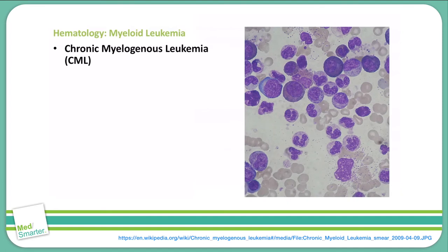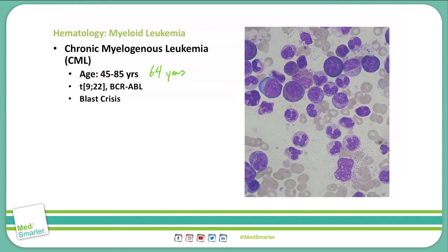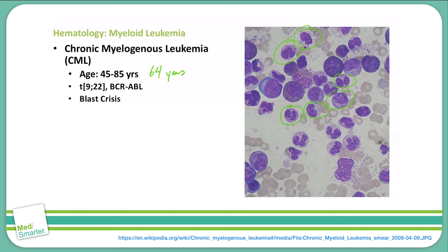The last myelogenous leukemia we'll discuss today is chronic myelogenous leukemia, also known as CML. The age of onset for CML is anywhere from 45 to 85 years of age, with a median age of about 64 years. CML is associated with translocation 9;22 — the Philadelphia chromosome — and it is BCR-ABL. CML can also potentially have a blast crisis, where the circulating immature leukemia cells accelerate and transform into AML or ALL.